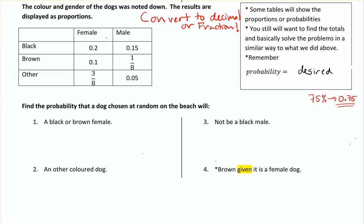So let's take a look — we've got males and females, and we've got colors: black, brown, or other, and we've been given the probabilities. The total proportion of black dogs would be 0.2 plus 0.15, so 0.35. Brown would be 0.1 and 1/8 — convert 1/8 to decimal: 1 divided by 8 is 0.125, plus 0.1 gives a total of 0.225. Coming along the bottom, 3/8 converts to 0.375, and 0.375 plus 0.05 gives you 0.425.